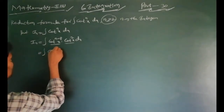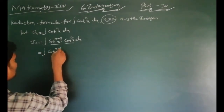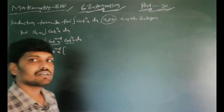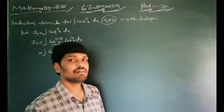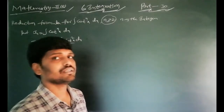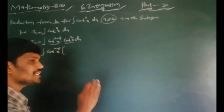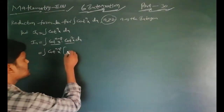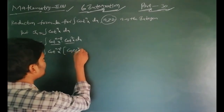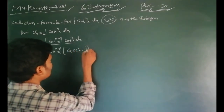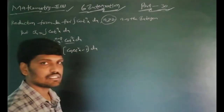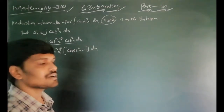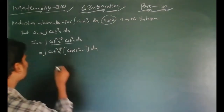We write the integral as cot^(n-2) x times cot² x dx. By the third trigonometric identity, cosec² x minus cot² x equals 1, so cot² x equals cosec² x minus 1. We substitute this into the integral.